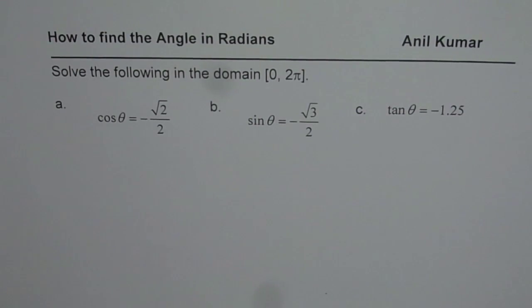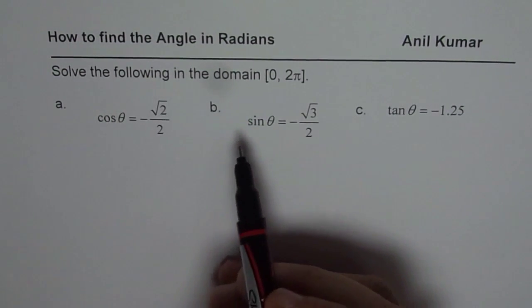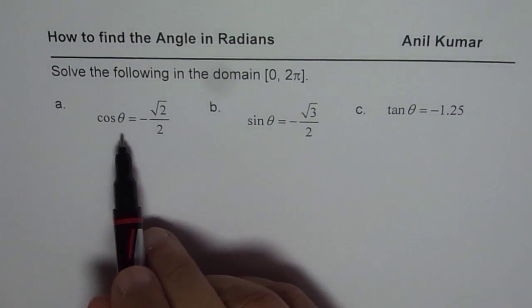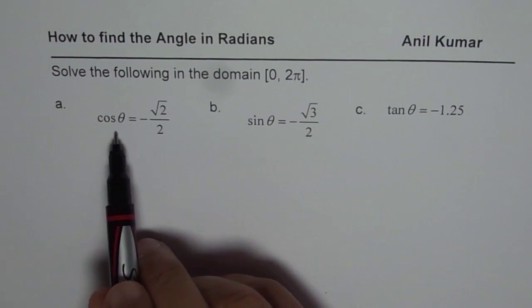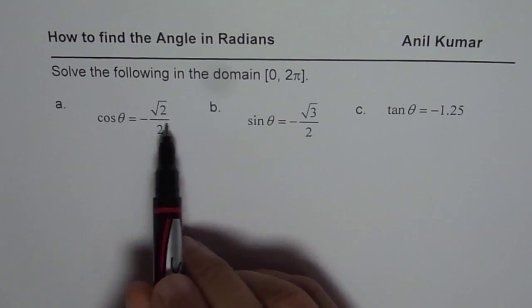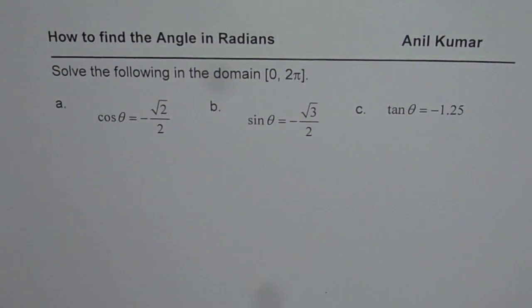I am Anil Kumar and here we will discuss what it means when we say find the angle in radians or solve the equation. So whenever we have an equation as given here, we are basically finding the angle which will make the trigonometric ratio equal to the value given to us. So we will discuss in this video how to find that angle in radians in the given domain.